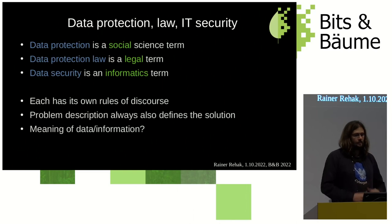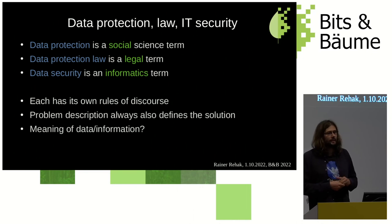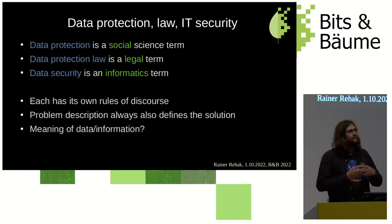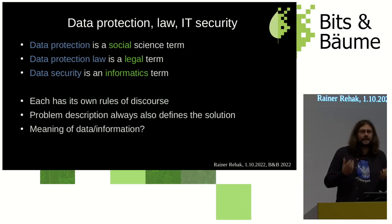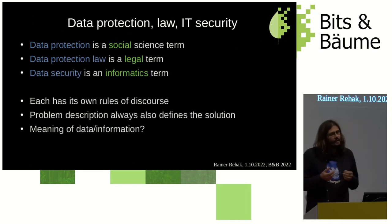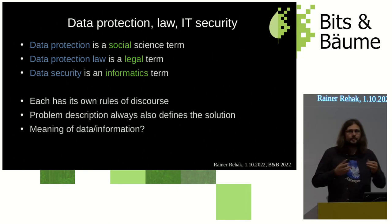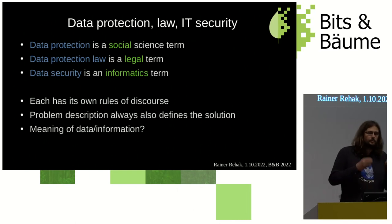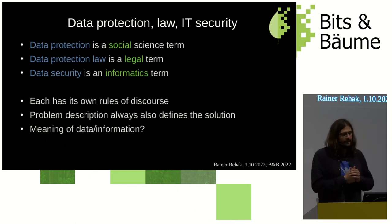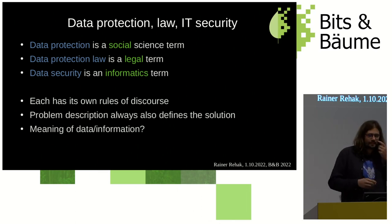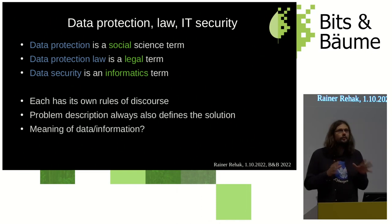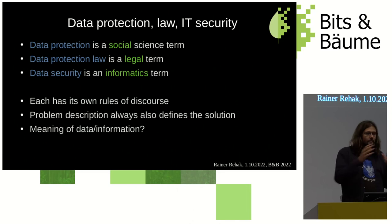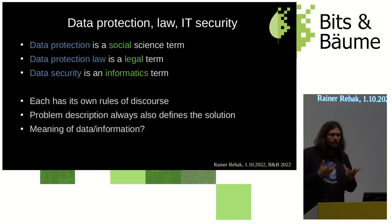Some basic terms. I'd like to differentiate data protection, data protection law, and data security. Data protection itself is a social science term — it's about society, about humans, about protection of things that are not technical. Data protection law is when we talk about GDPR or other regulations — the legal form of data protection. Data security is an informatics or computer science term about how you actually deal with the data and data processing itself. Each has its own rules of discourse, and sometimes they don't even agree on what they are about.